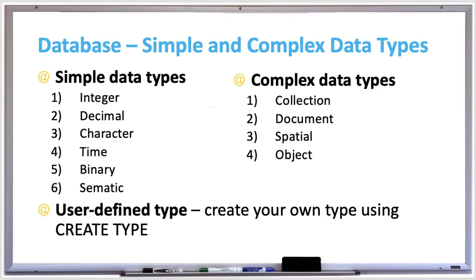And semantic, which are types that have special meanings like Boolean, where one is true, zero is false, or enum for enumerated values, like the set of colors in a traffic light: yellow, green, or red. Or even money for currency representation.